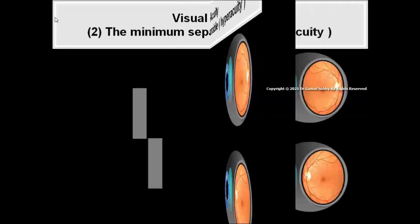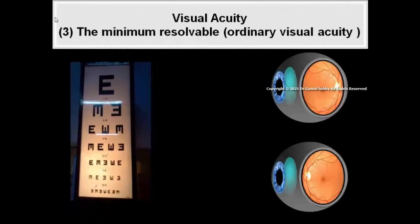3. The minimum resolvable, ordinary visual acuity is the ability to determine the presence of or to distinguish between more than one identifying feature in a visible target.